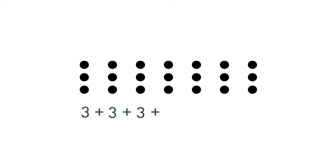To find the total number of miles, we can add 3 plus 3 plus 3 plus 3 plus 3 plus 3 plus 3, which is equal to 21.